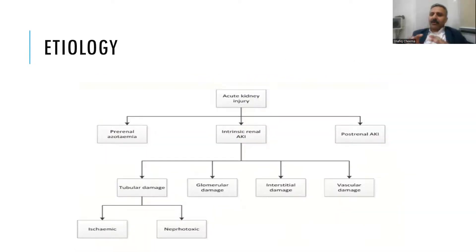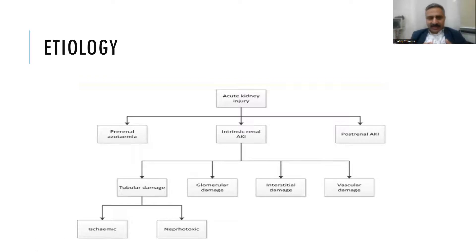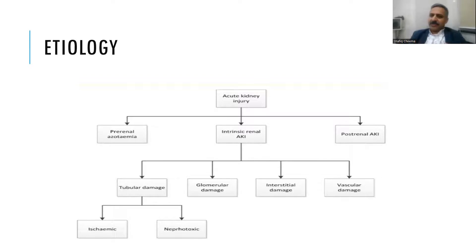This is different from the etiological classification, which differentiates AKI based on causes: pre-renal azotemia, intrinsic renal disease, and post-renal AKI. Intrinsic renal disease is further divided into four parts — tubular damage causing acute tubular necrosis; glomerular disease causing glomerulonephritis, nephritic syndrome, and RPGN; interstitial inflammation causing acute interstitial nephritis; and small vessel involvement causing vasculitis, as seen in Goodpasture syndrome or Wegener's granulomatosis. Tubular damage can be ischemic or nephrotoxic.